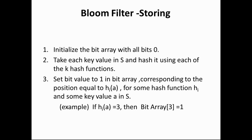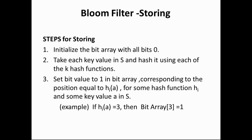To store in a Bloom filter: initialize the bit array with all bit values equal to 0. Take a key value in S and hash it using k hash functions. Set the bit value equal to 1 in the bit array for the position equal to hi(a), for each hash function hi and each key value a in S. For example, if hi(a) equals 3, then the third position of the bit array is set to 1. These are the steps for storing in a Bloom filter.